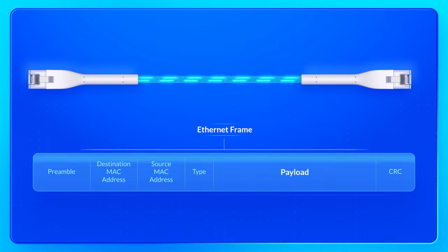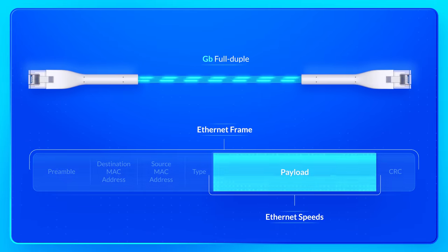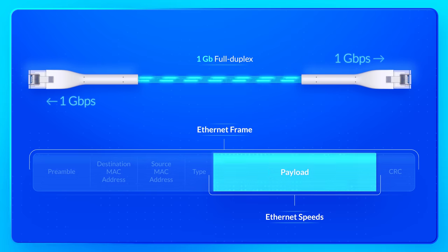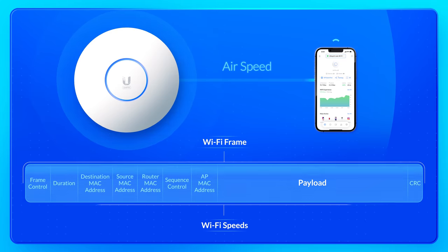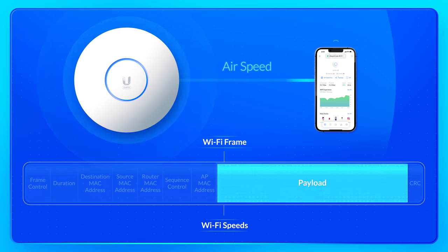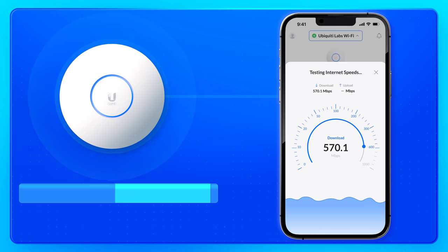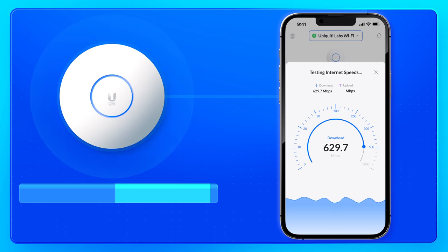Ethernet speeds are specified as just these payloads in both directions, which is why when you use gigabit Ethernet, you expect a gig and get a gig. Wi-Fi speeds take into account the complete frame, where only about half is a packet's payload of usable data — the rest is just overhead. This is why Wi-Fi devices typically only deliver a fraction of their advertised maximum speeds, or 50% at best.